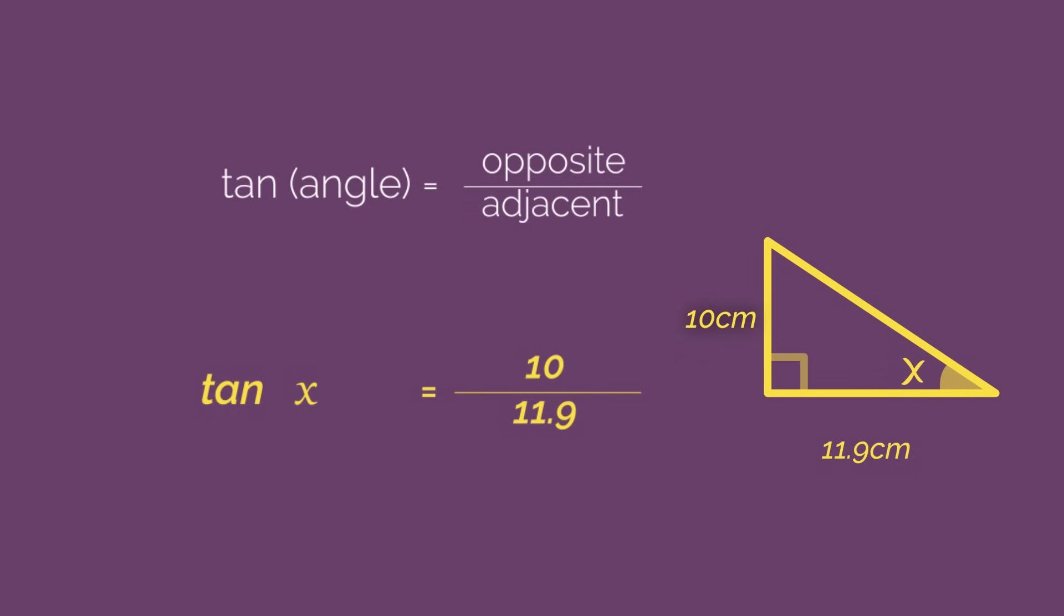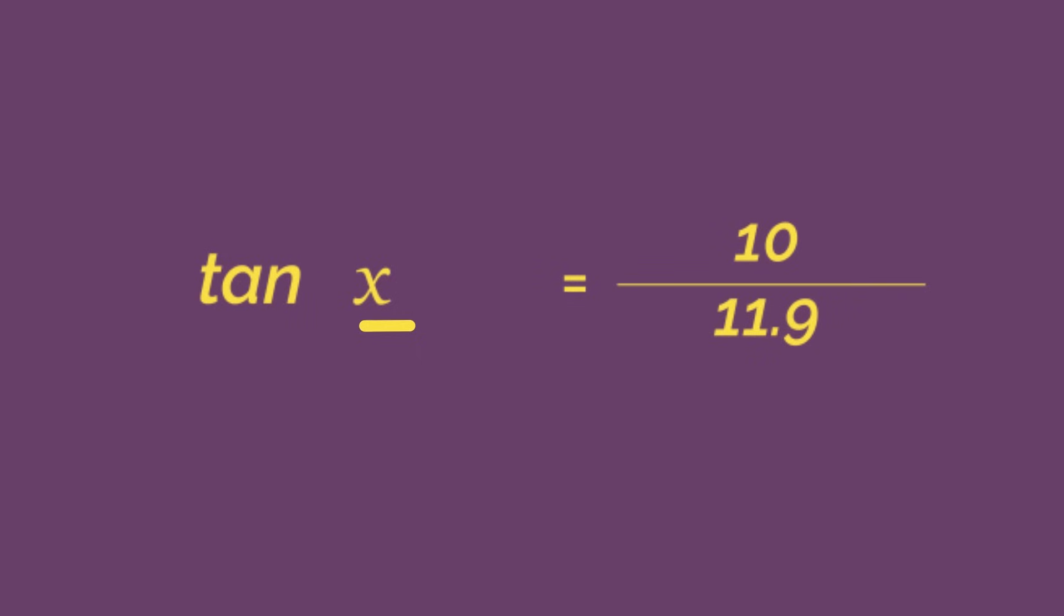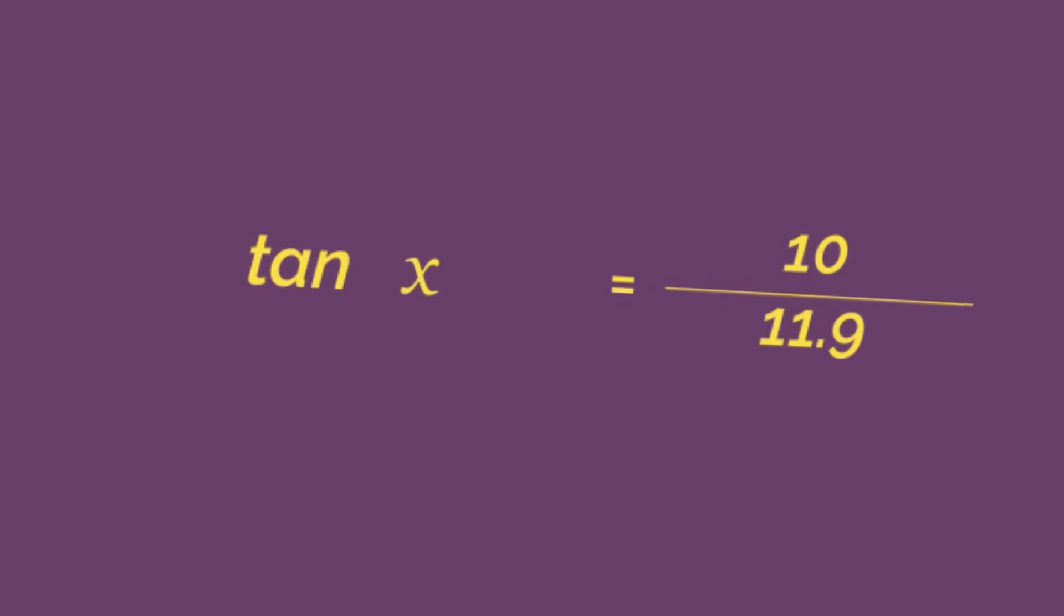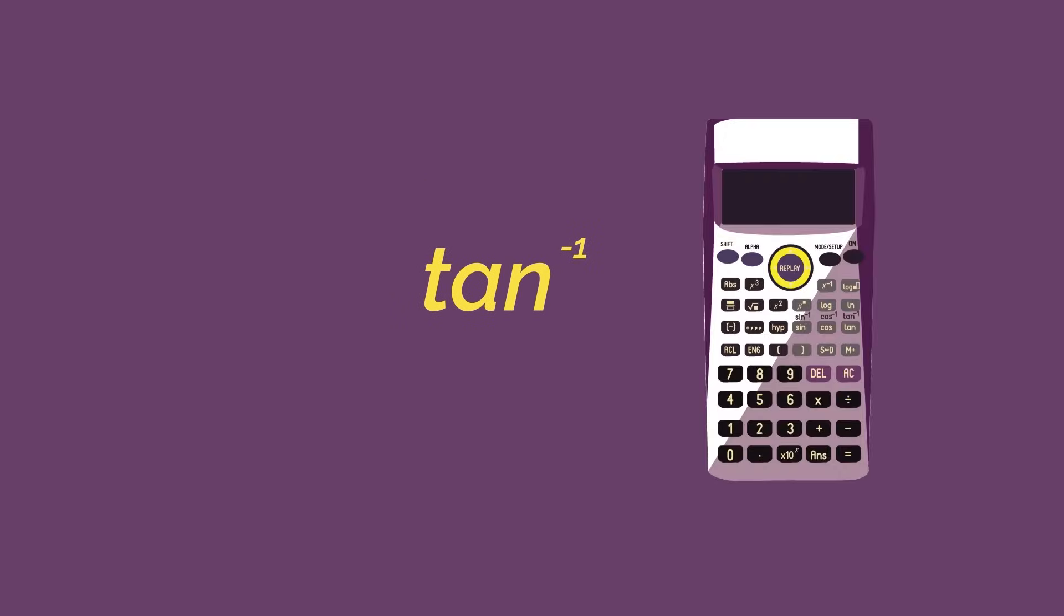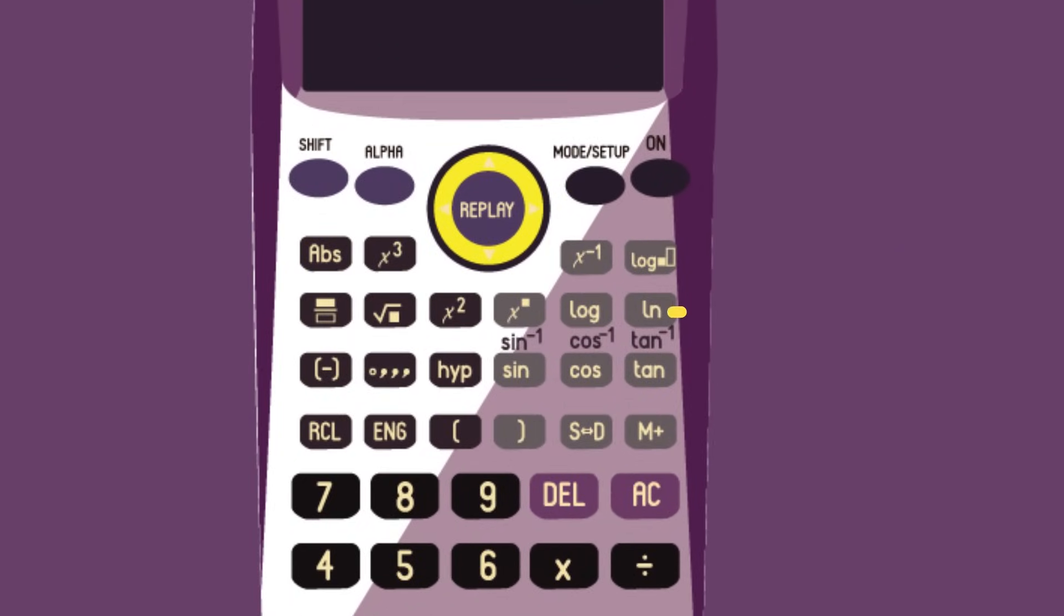Now this is a new part. To get x on its own, you cannot divide by tan to separate the tan and x. We use inverse tan. Have a look at your calculator and it is above the tan button. See that it's written as tan to the minus one and it's also called arctan. Inverse sine and inverse cos are also here.